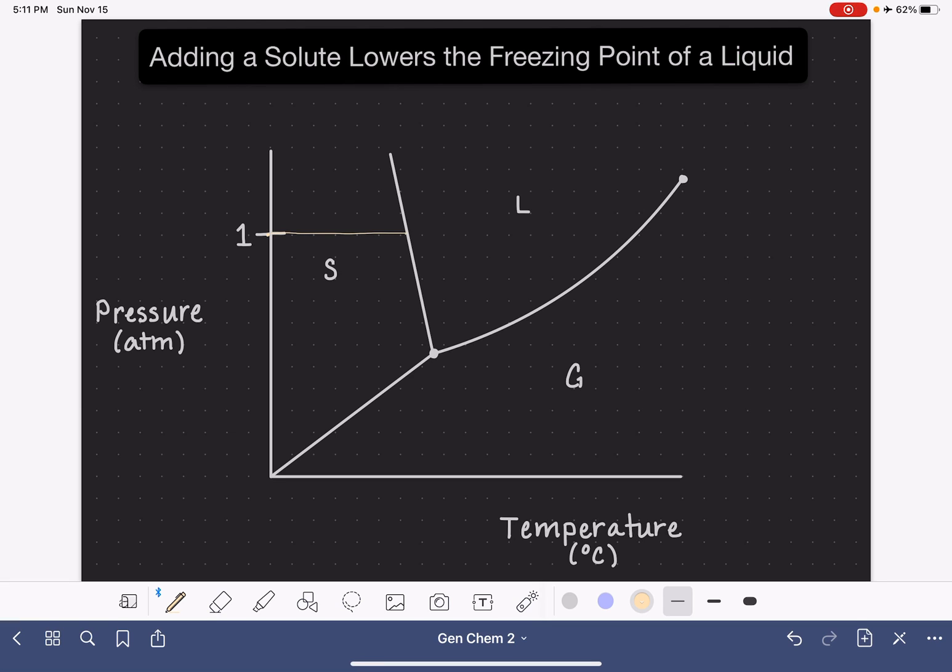So once we've identified that point, we're going to go down to the temperature axis right here. And the temperature that corresponds to this particular pressure is what we identify as the freezing point, the standard freezing point of this particular substance. So this is the freezing point of, we're going to call this the solvent, just the pure liquid.